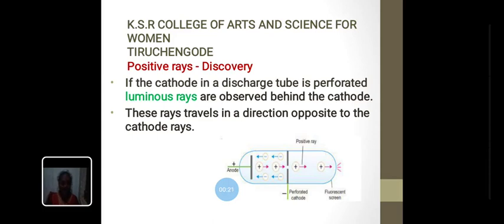If the cathode in a discharge tube is perforated, luminous rays are observed behind the cathode. These rays travel in a direction opposite to the cathode rays, that is from anode to the cathode.